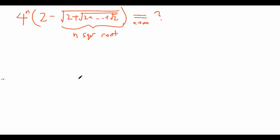Hi guys, it's Daniel here. Last time I left you with this question: if we have 4 to the power of n times the quantity 2 minus the square root of 2 plus square root of 2 plus square root of 2, all the way to square root of 2 with n nested square roots, then what does this value approach as n goes to infinity? The correct answer is, unbelievably, pi squared over 4. So how could this completely random expression with a bunch of nested square roots somehow approach pi squared over 4?